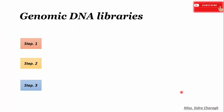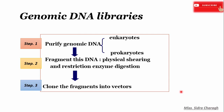To design a genomic DNA library, three main steps are involved. First is purifying the genomic DNA from either prokaryotes or eukaryotes. Then, after genomic DNA isolation, we do fragmentation by either the physical shearing method or restriction enzyme digestion. The third step is cloning the fragment into the vector.